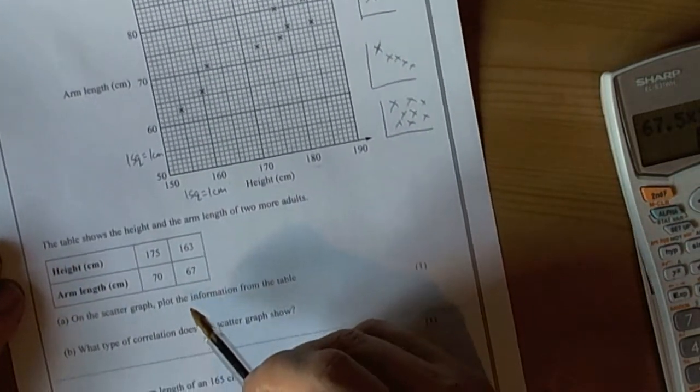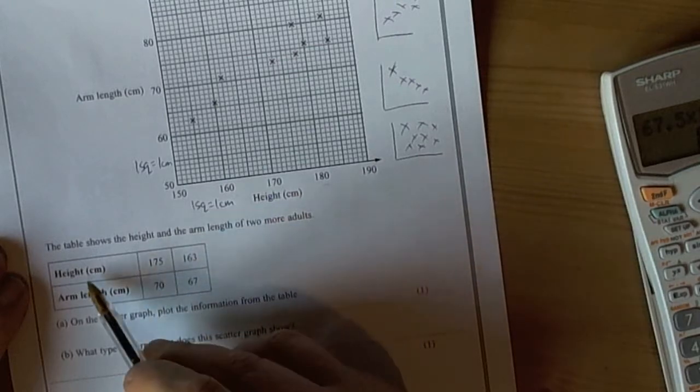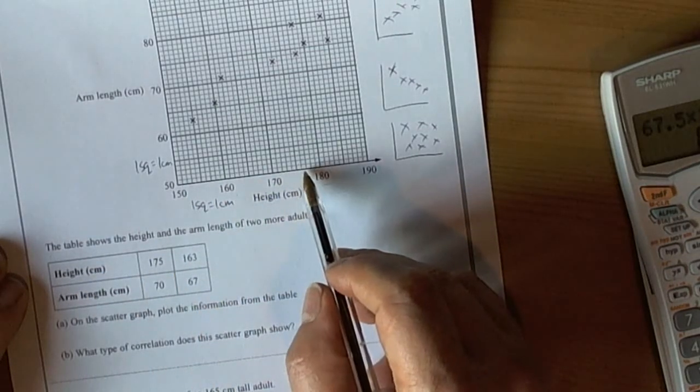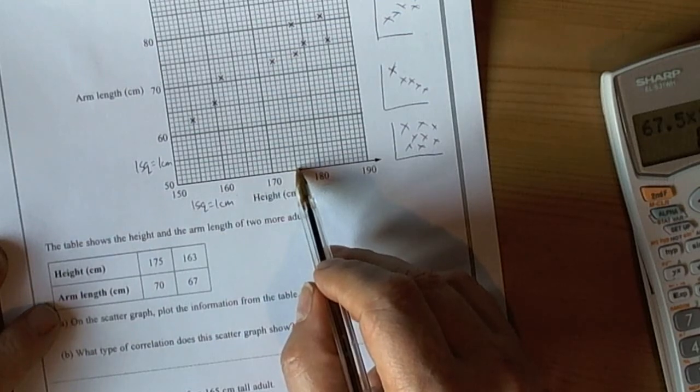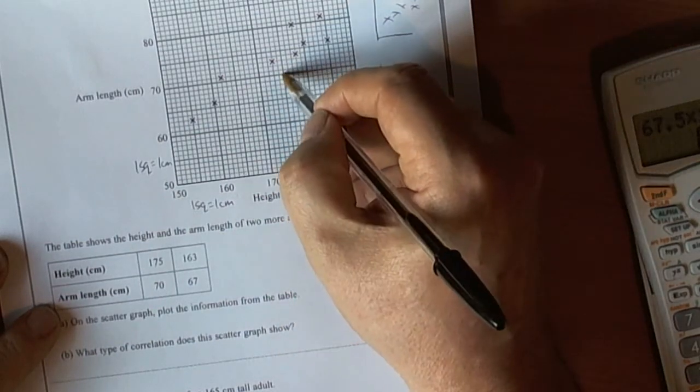The question is asking you to plot two values. So we've got a height of 175, so on the scale we can go across and find 175. And the arm length is 70, so if we go up to the arm length and then we plot that as a cross like they've done.